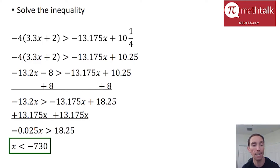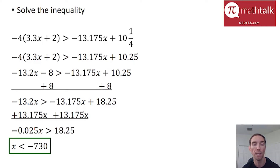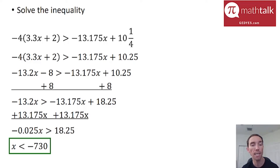When you do that, you get x is less than negative 730. It's important to note that the inequality sign switched directions. That's actually what's supposed to happen. The trick to solving inequalities is that whenever you multiply or divide by a negative number in the last step, you have to switch the sign. In this case, I'm switching it from greater than to less than. The reason 730 is such a large number is because dividing by a really small decimal is really the same as multiplying by a large number.